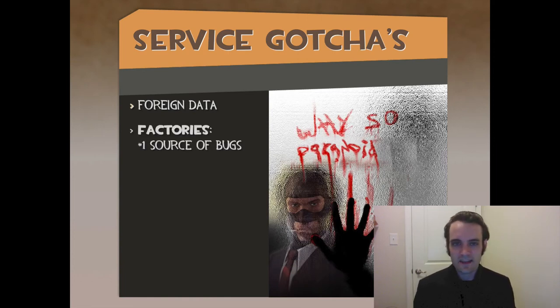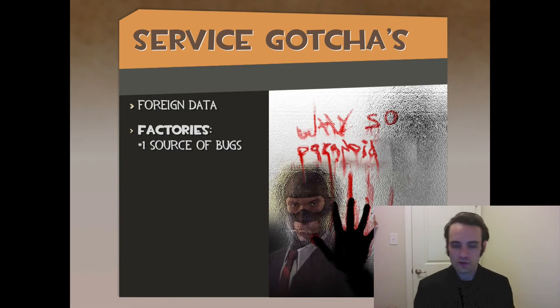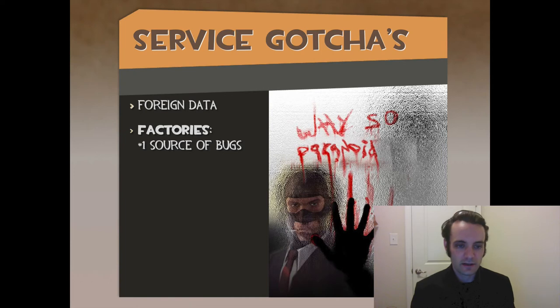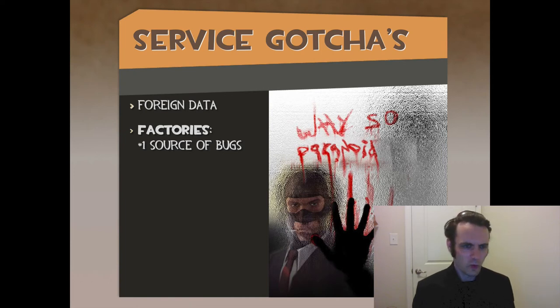Factories — things that parse data from the server: XML, JSON, text, whatever — are the number one source of whack bugs. When I say whack bugs, I mean bugs that are like, what? What's going on here?